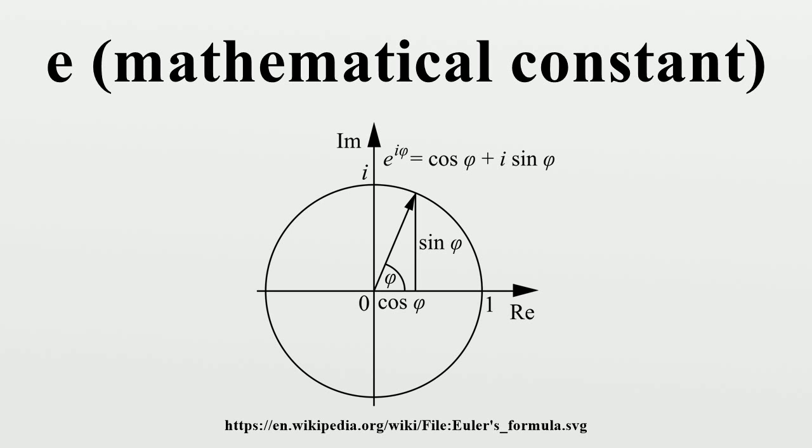It can also be calculated as the sum of the infinite series. The constant can be defined in many ways. For example, e can be defined as the unique positive number such that the graph of the function y equals e^x has unit slope at x equals 0.